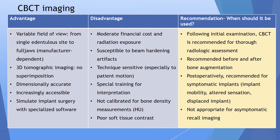Next is CBCT imaging, one of the most important advancements and a must-have imaging modality for implant placement. It has the advantage of having variable field of view, from single edentulous sites to full jaws, with options such as 8×5, 8×8, or 12×9 cm depending on your manufacturer. There is three-dimensional tomographic imaging involved, so there is no superimposition at all. It is dimensionally accurate most of the time — the image area is exactly the same size as your actual tooth or bone. It is increasingly accessible, and specific software allows you to simulate the whole process of implant placement and visualize how it would look after the implant is placed inside the jaw.